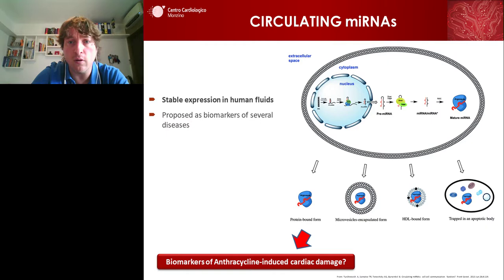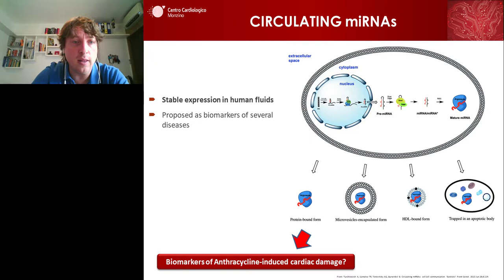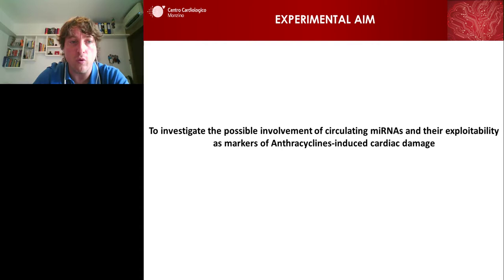But we were speaking about circulating microRNAs. In this case, the microRNAs go outside the cell. They can be found in plasma and in other human fluids, bound to proteins or inside vesicles. They are very stable because they are protected from nucleases, and they have been proposed as biomarkers of several diseases. So we decided to investigate whether they could be used as biomarkers of anthracycline-induced cardiac damage, and that was the aim of our research.